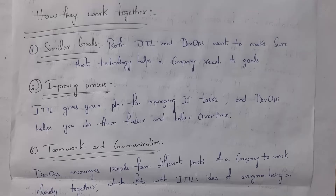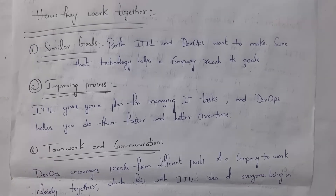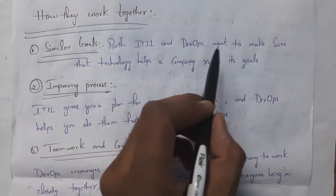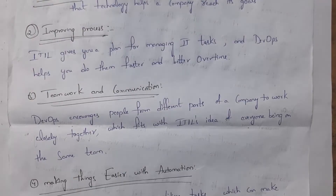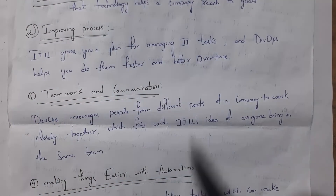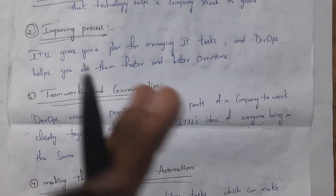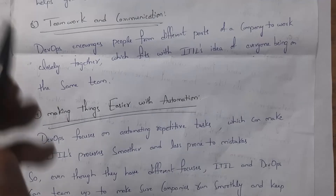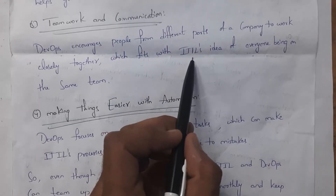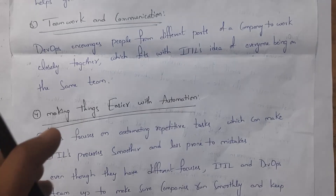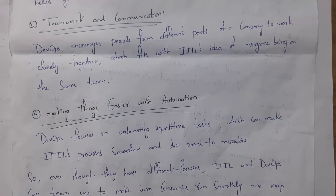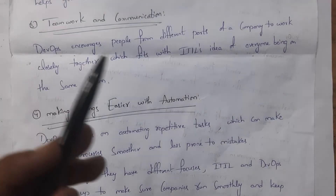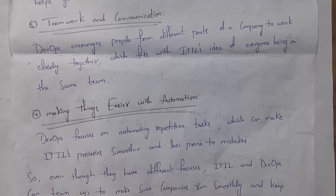DevOps and ITIL work together in several ways. First, similar goals — both want to use technology to help a company reach its goals. Second, improving process — ITIL provides a plan for managing IT tasks while DevOps provides tools for completing work faster and better. Third, teamwork and communication — ITIL says everyone must work together, and similarly in DevOps both development and operations teams communicate and collaborate to complete work.